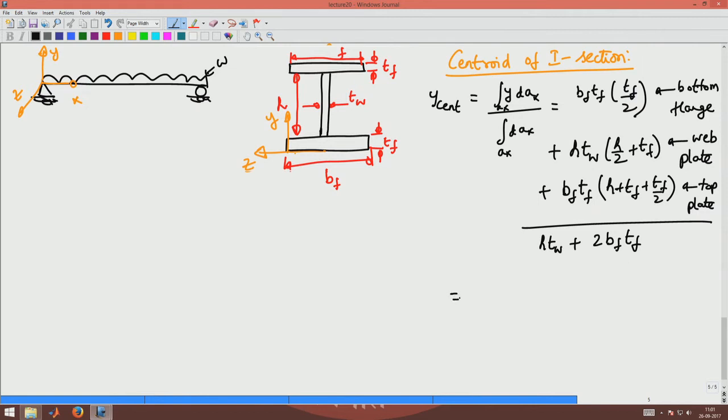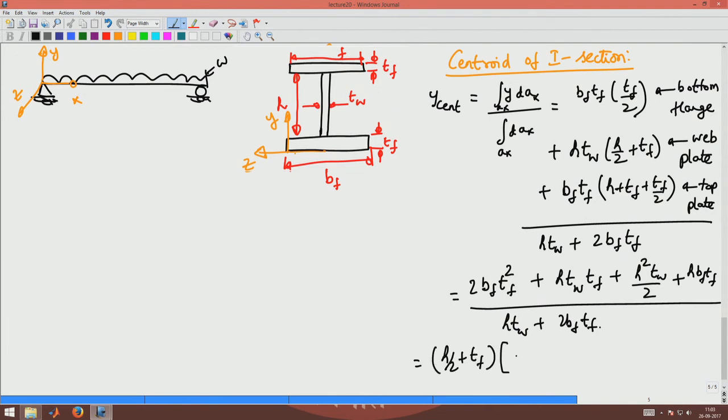This will give me Bf times Tf times 2 Tf squared plus H times Tw times Tf plus H squared Tw by 2 plus H times Bf Tf, divided by H times Tw plus 2 Bf Tf.